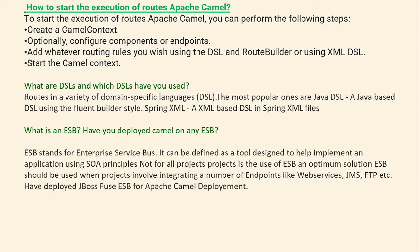How to start the execution of routes in Apache Camel? To start route execution, you can perform the following steps: Create a Camel context; optionally configure components or endpoints; add routing rules using DSL and RouteBuilder or XML DSL; then start the Camel context.